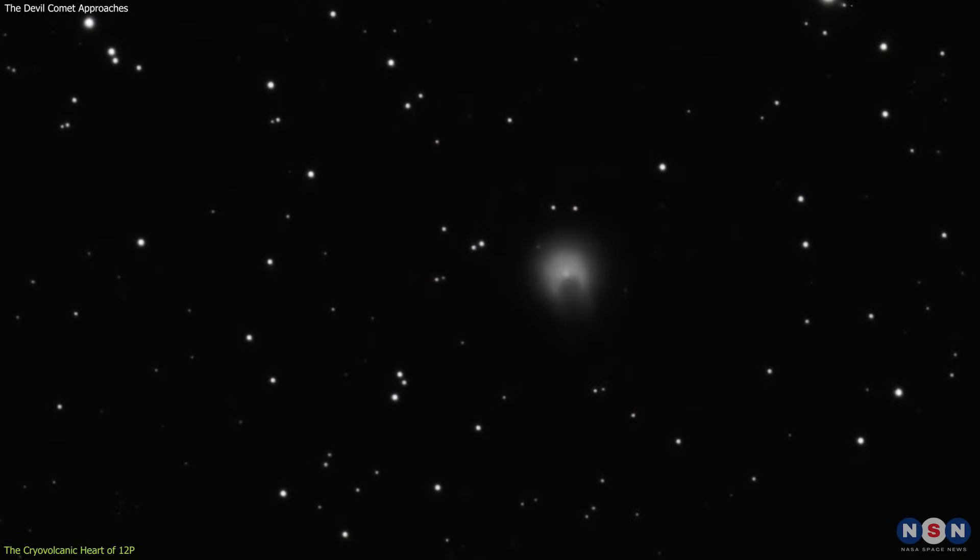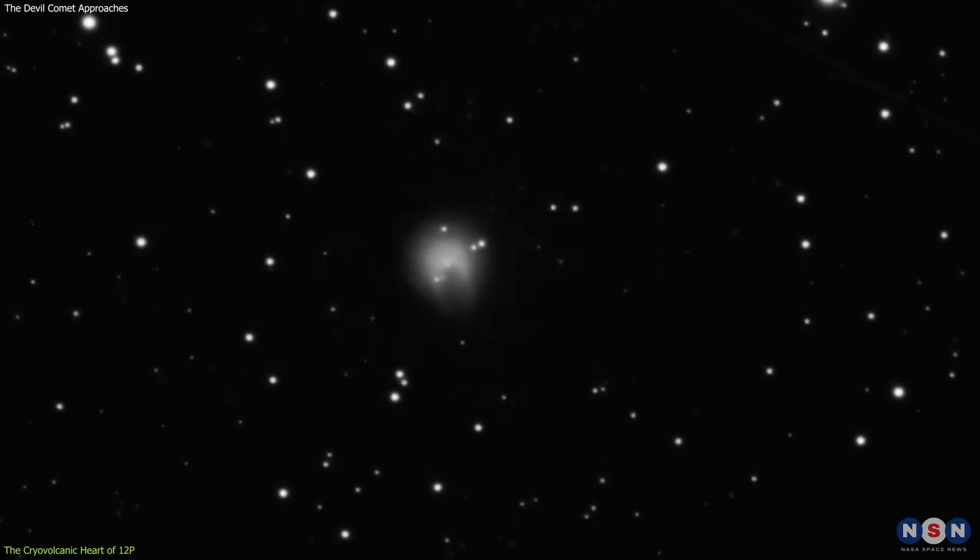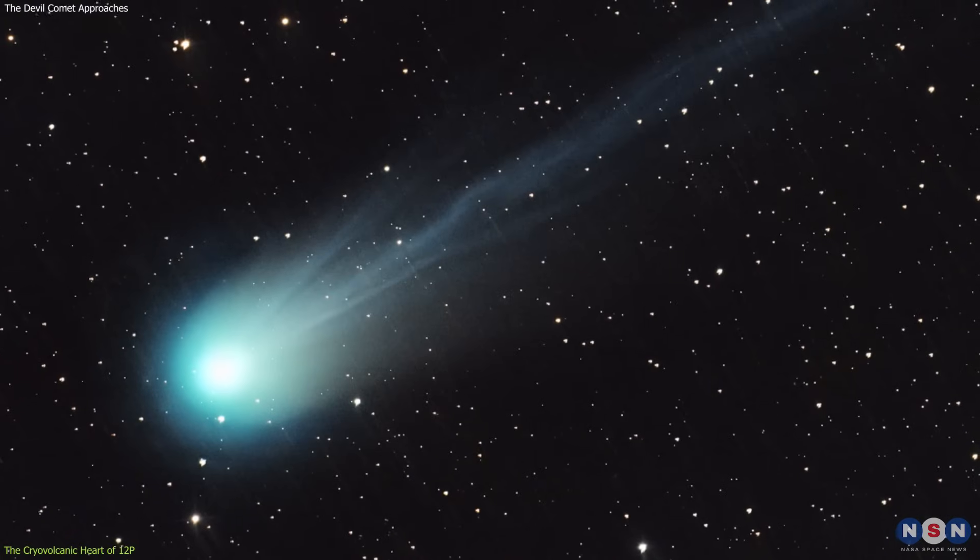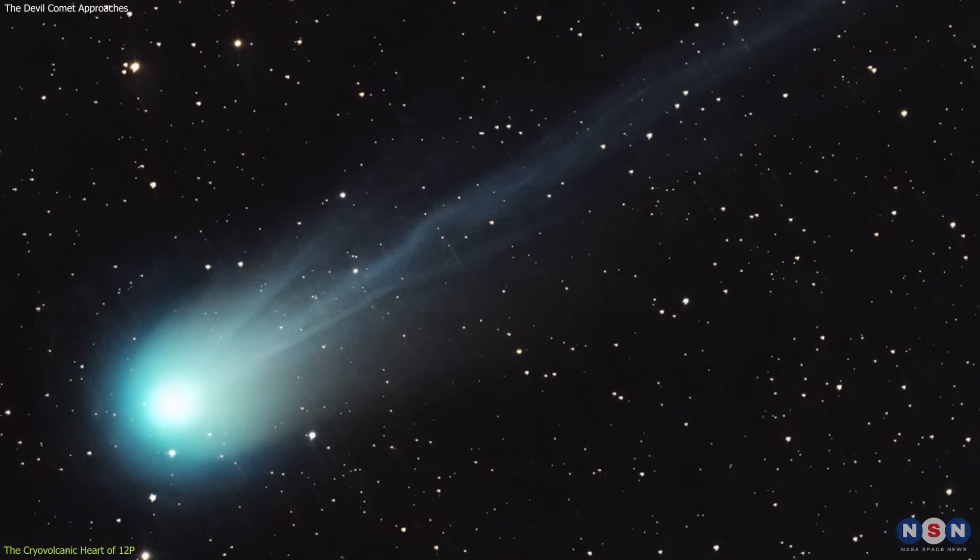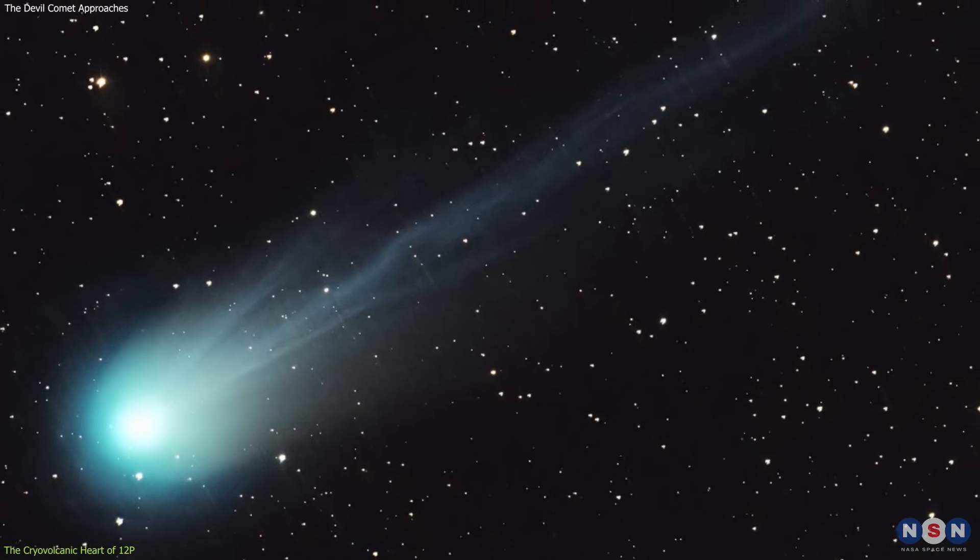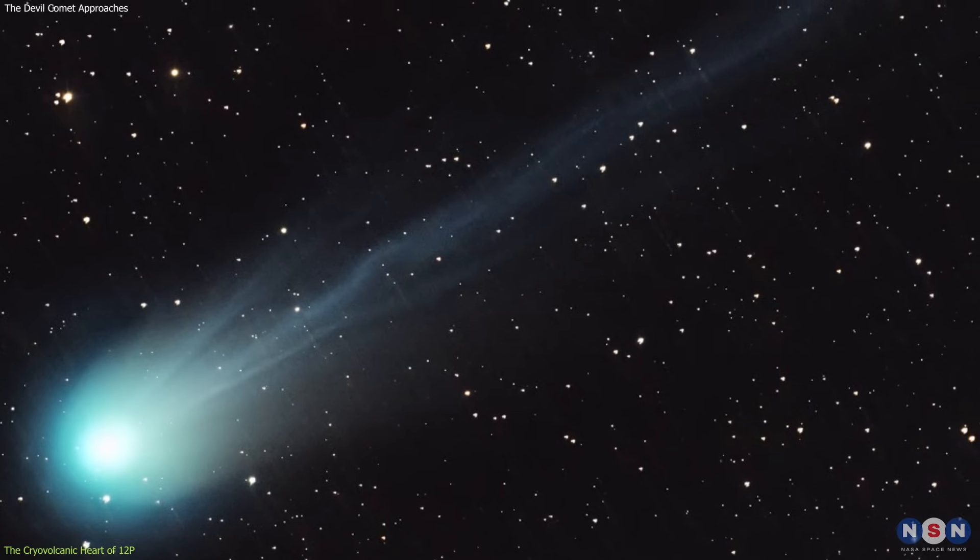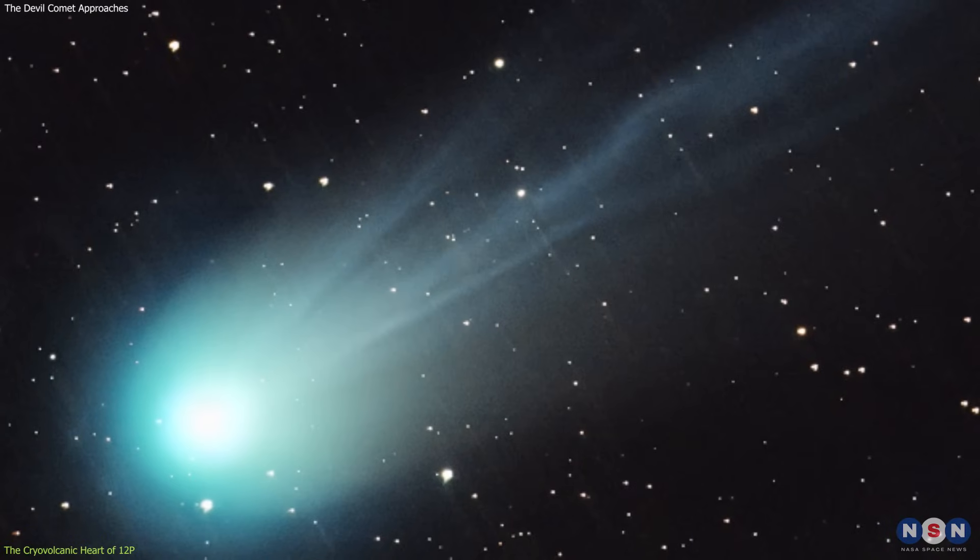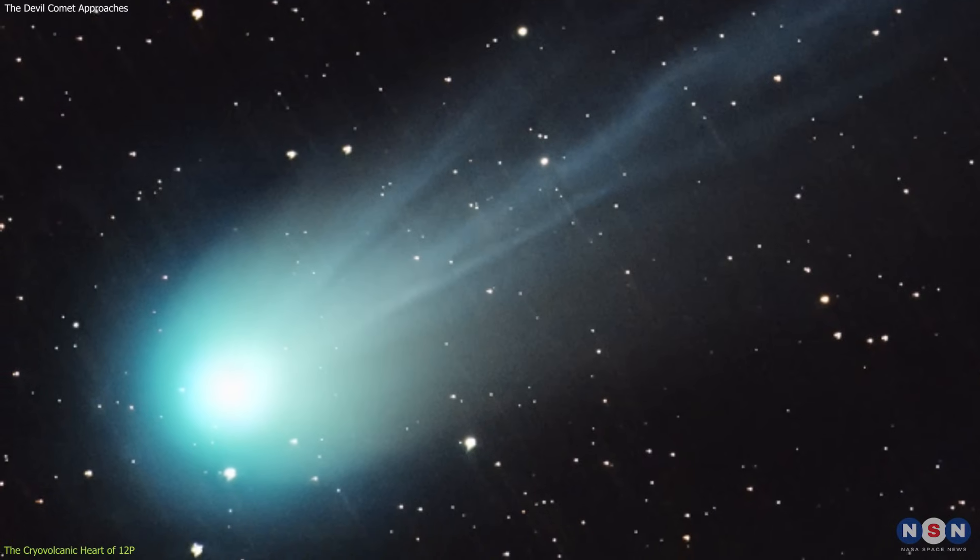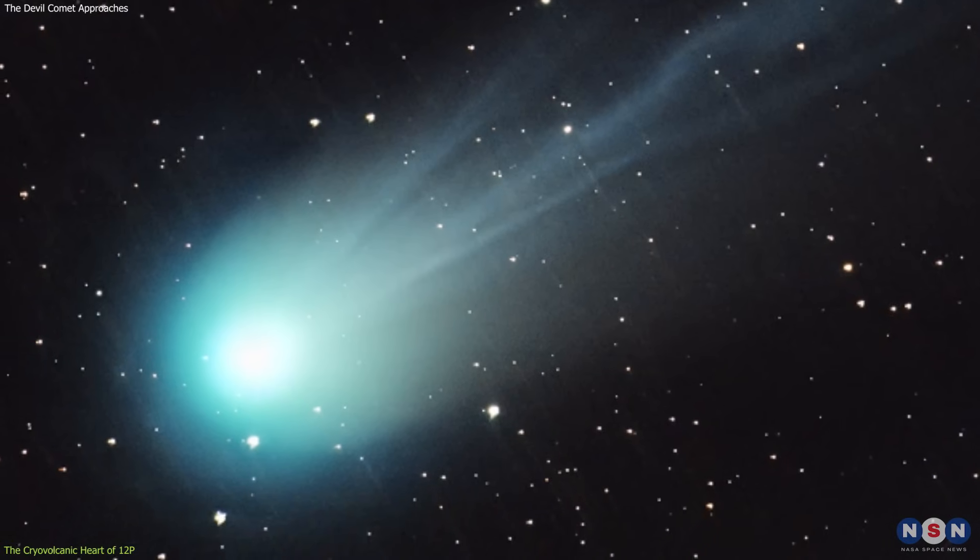In July of the preceding year, astronomers were treated to a cosmic spectacle when they observed 12P unleashing its fury for the first time in nearly seven decades. The event was so dramatic that it earned the comet its sinister nickname. The eruptions gave rise to an irregular shape in the comet's expanded coma, caused by a notch in the nucleus that obstructed the flow of cryomagma. This peculiar formation resembled demonic horns, adding to the comet's mystique.